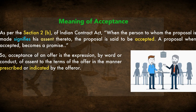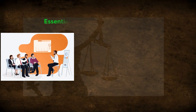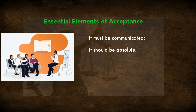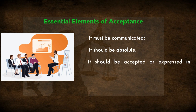The next point is essential elements of acceptance. First, it must be communicated — you must communicate your assent, your reply, to the person who proposed to you. Second, it should be absolute and clear — not something like 'I will accept, let you know later.' Third, it should be expressed in the prescribed manner as per the given terms and conditions.